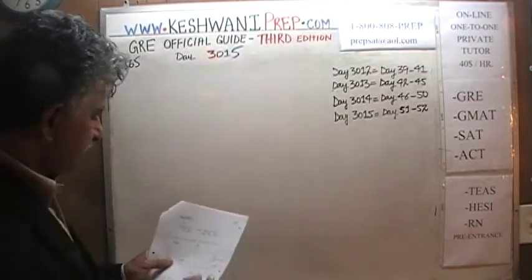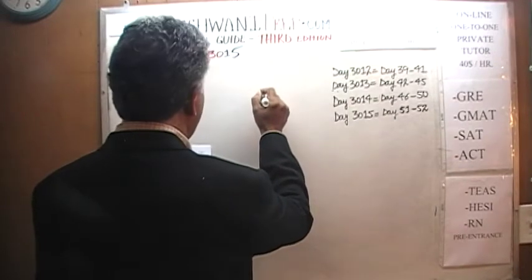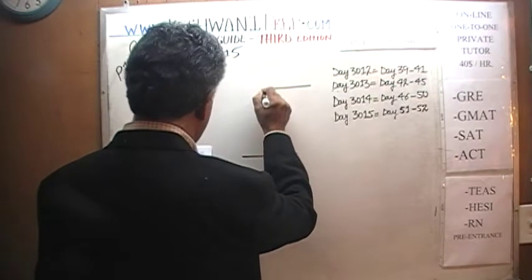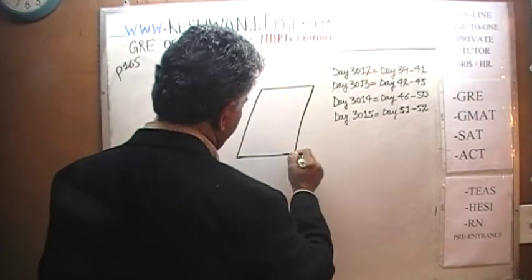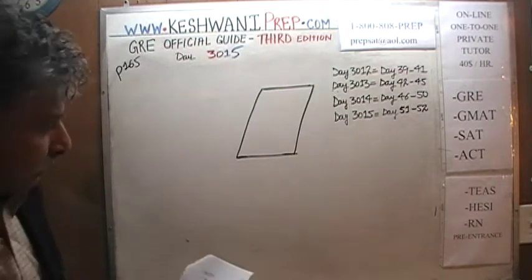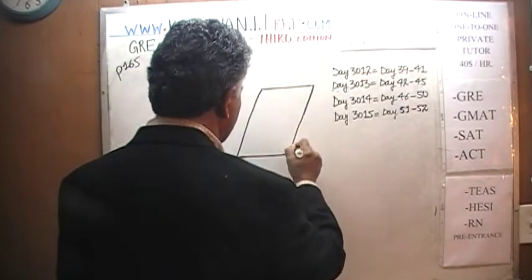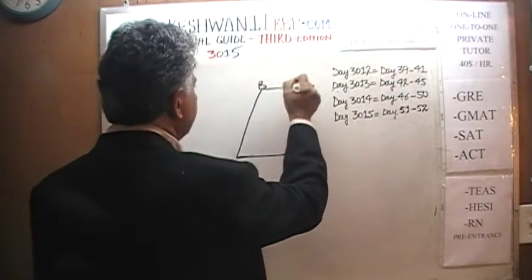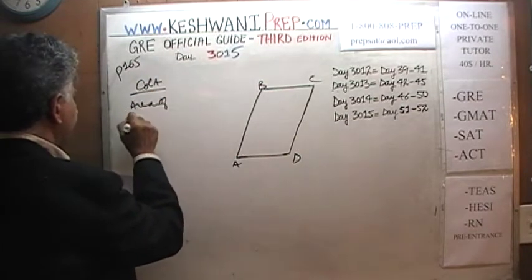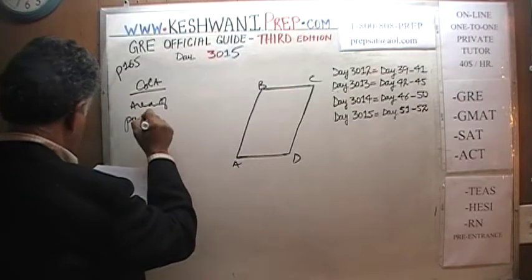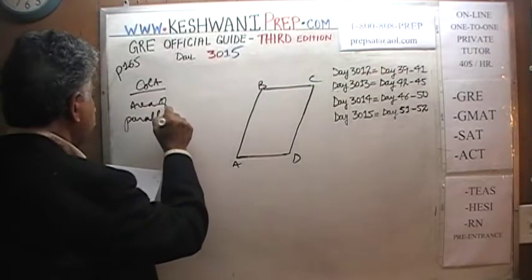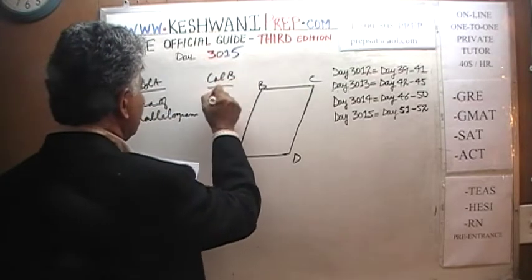Here is what is given to us — a picture of a parallelogram. We are being asked to compare the area of this parallelogram, column A, versus column B, which is simply 24.